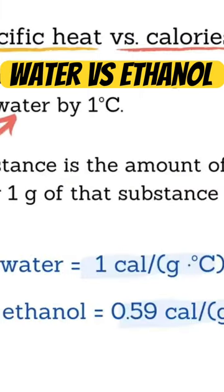Let's look at the specific heat of another substance: ethanol. Ethanol is the alcohol you would find in beer or wine. Ethanol's specific heat is 0.59 calories, which is much lower than water's specific heat.